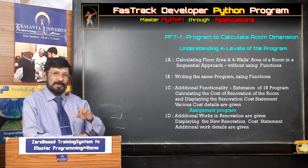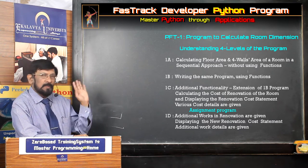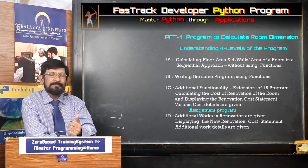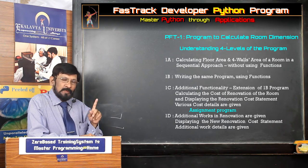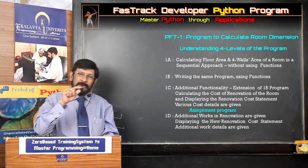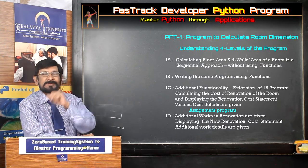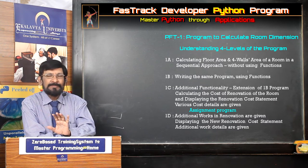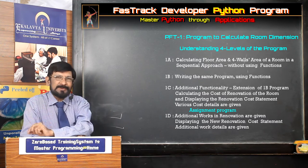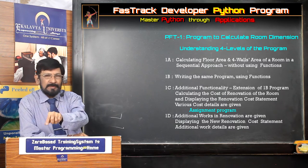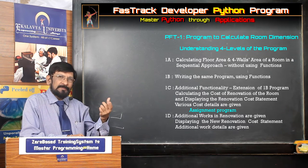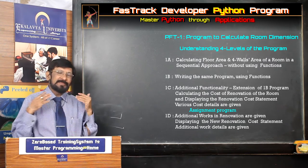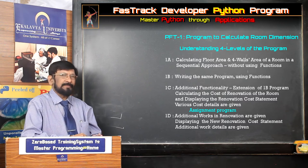Now I am giving you a renovation task — renovation means replacing the floor tiles and repainting the room. For replacing the floor you take the floor area; for repainting the room you paint the four walls area minus the total area of the doors and windows, and the ceiling is also included. I give you the cost details, and you have to prepare a renovation cost statement covering the cost of renovating the flooring, the walls, and the ceiling.